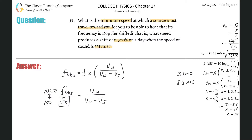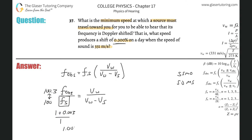To plug in that 0.3 percent: I set the frequency of the source equal to 1. The frequency the observer experiences will then be 1 plus 0.003, which equals 1.003 — converting from percent to decimal. This fraction represents the velocity of sound divided by the velocity of sound minus the velocity of the source.